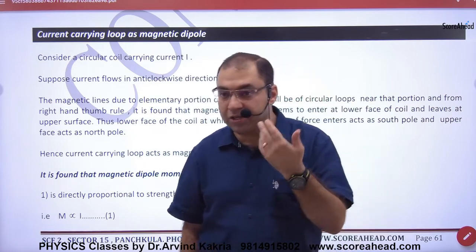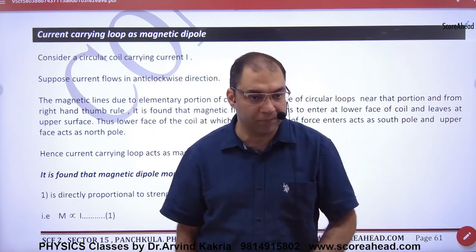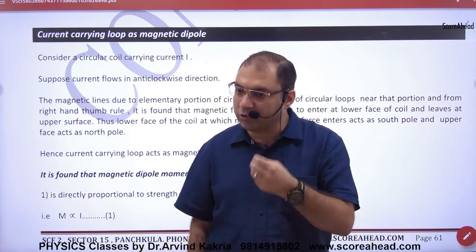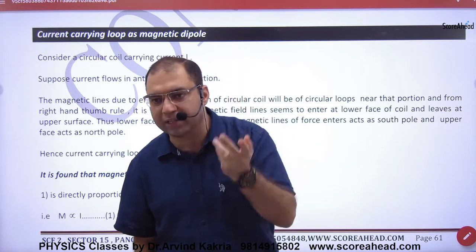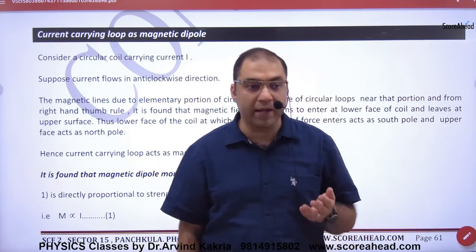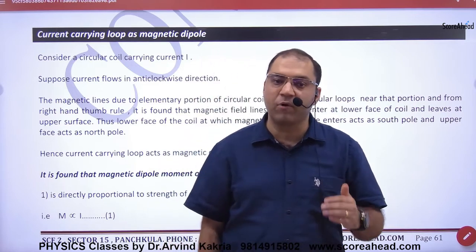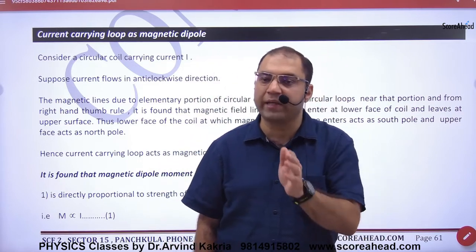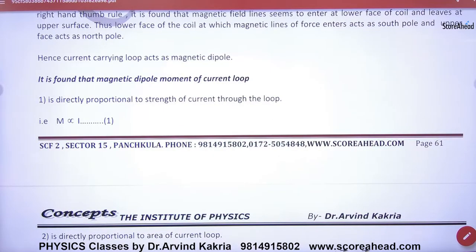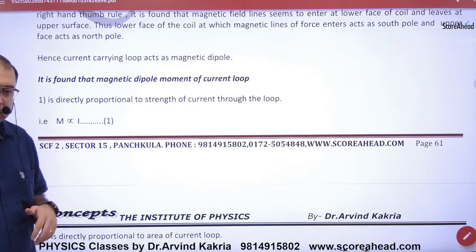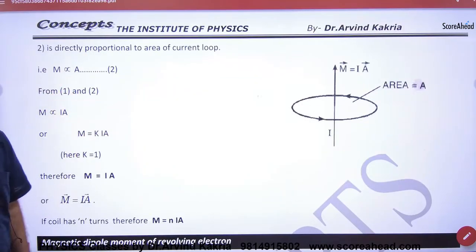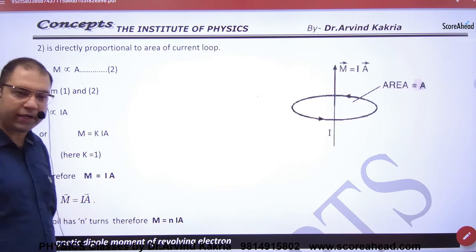Since poles are imagined, B is generated, and it works like a magnet, we can define a magnetic dipole moment. Capital M, the magnetic dipole moment of a current-carrying loop, is proportional to the current I and proportional to the area A of the loop. Combining with proportionality constant K equal to 1, the formula is: capital M equals I into A.